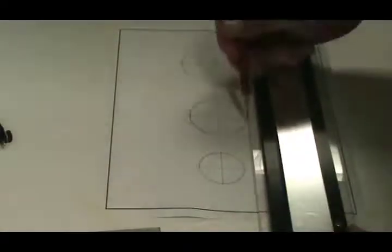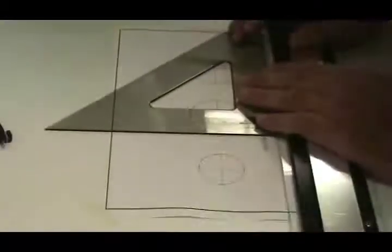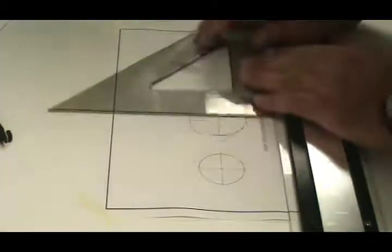Then we're going to use our parallel bar and draw a horizontal line at the top of the circle. Then come down at the bottom of the circle, draw a horizontal line. And then vertical lines on each side of the circle.